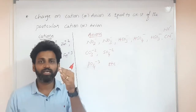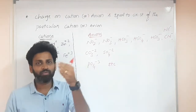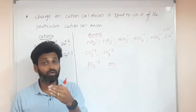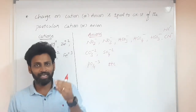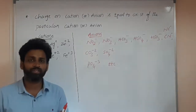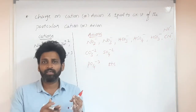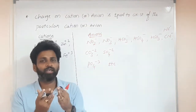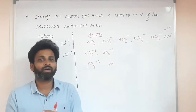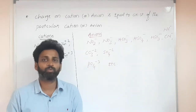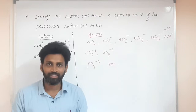For halogens, the general oxidation state is minus one. Fluorine is always minus one. Remaining halogens can have positive oxidation states — chlorine can exhibit plus one, plus two, plus three, plus five, and plus seven. We will see further examples with oxides.